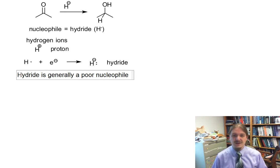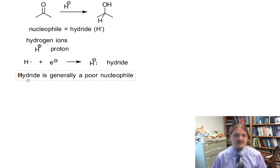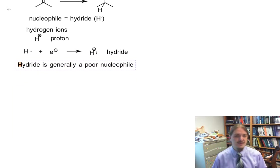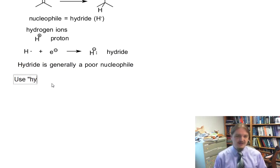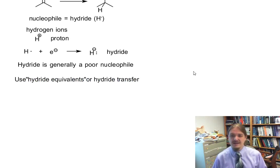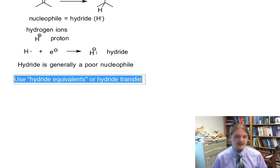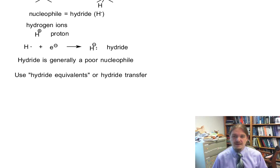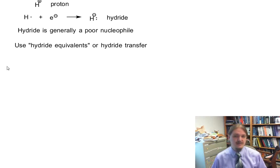Unfortunately, hydride is generally a particularly poor nucleophile. It's a really strong base. And so if there's any kind of acid-base reaction that could happen, hydride is going to do that first. So hydride is generally a poor nucleophile. So if we want to use hydride as a nucleophile, we need to use things that are hydride equivalents, things that can act like they are hydride. Or what I'm going to talk about here are hydride transfer reagents. And these are compounds that are capable of delivering hydride equivalents to electrophiles.